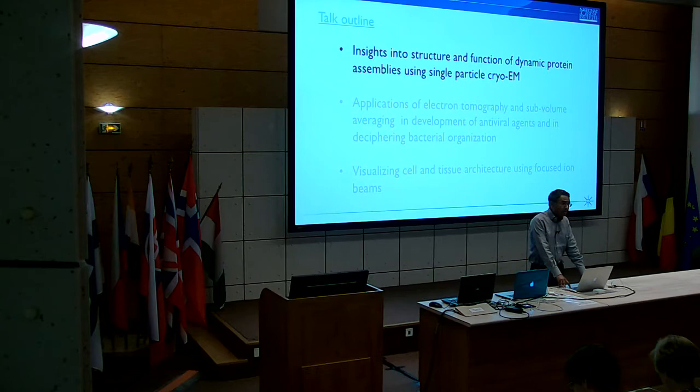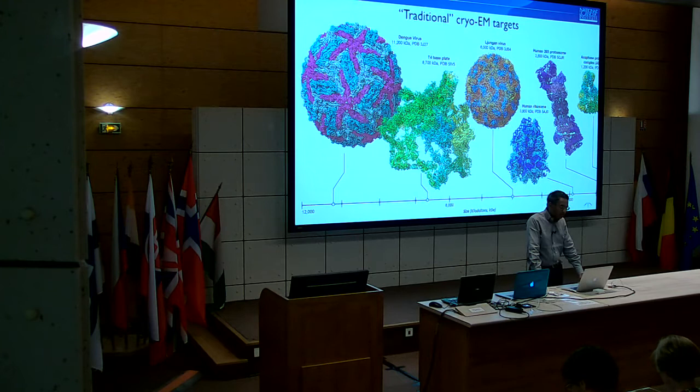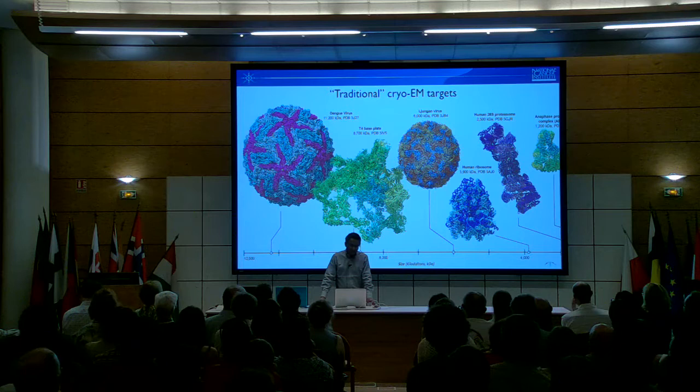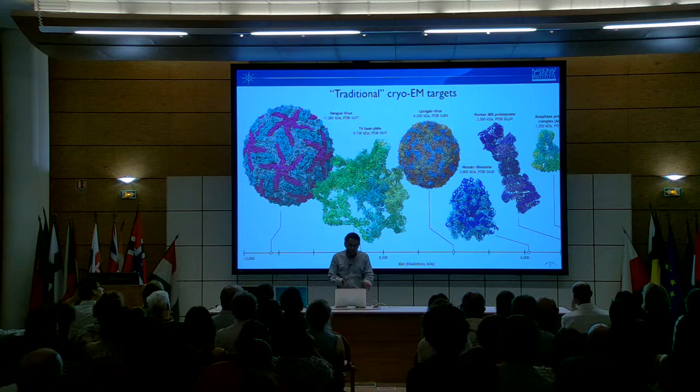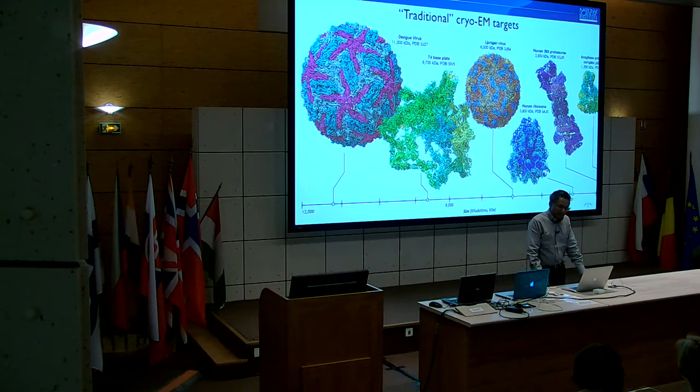By way of introduction to where the field is in using Cryo-EM to look at protein structures: if you look back almost a decade ago, there were the traditional Cryo-EM targets — large viruses, large protein assemblies, ribosomes. The pioneering work that Joachim Frank and Maren van Heel did started with ribosomes. Traditionally, people would ask in the early years: is your protein big enough to be looked at by Cryo-EM?